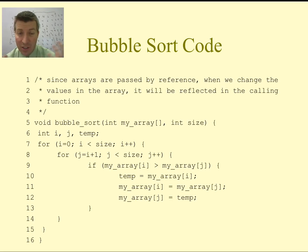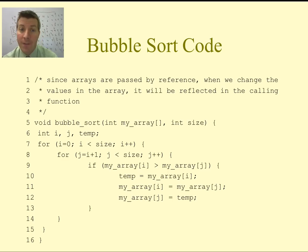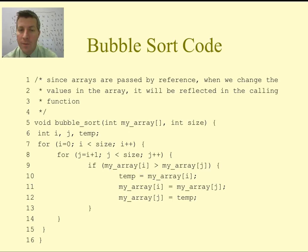Bubble sort is probably one of the most popular sorting algorithms that exist because programmers can write it in relatively few lines of code, and they often use it when they just need to sort something very small. If you need to sort a very large list — on the order of hundreds of thousands or millions or more elements — you probably do not want to use bubble sort or selection sort. There are other more complicated sorting algorithms that will run faster on those types of lists: heap sort, merge sort, and quick sort are some popular ones.